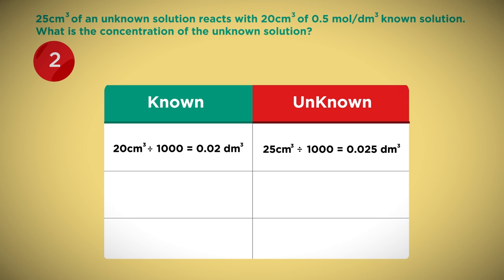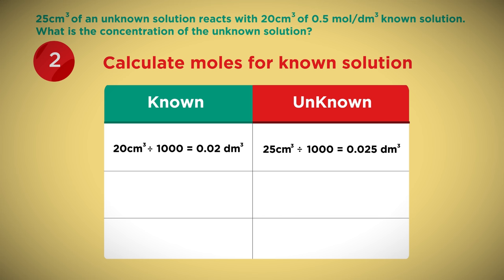Now you need to work out the number of moles for the known solution, because we already know the concentration and volume for this. The number of moles equals concentration multiplied by volume. So in this case, for the known solution, the number of moles equals 0.5 multiplied by 0.02, which equals 0.01 mole.